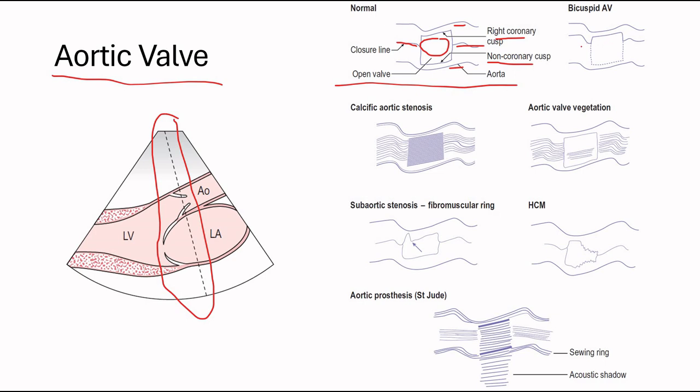And in a bicuspid aortic valve, the line is shifted upwards, as so. If there's aortic valve stenosis, and it's calcified, the box is pretty much filled in. If there is aortic valve vegetation, you got some filling of the opening of the aortic valve. If there is a subaortic stenosis, you see a bump like this.